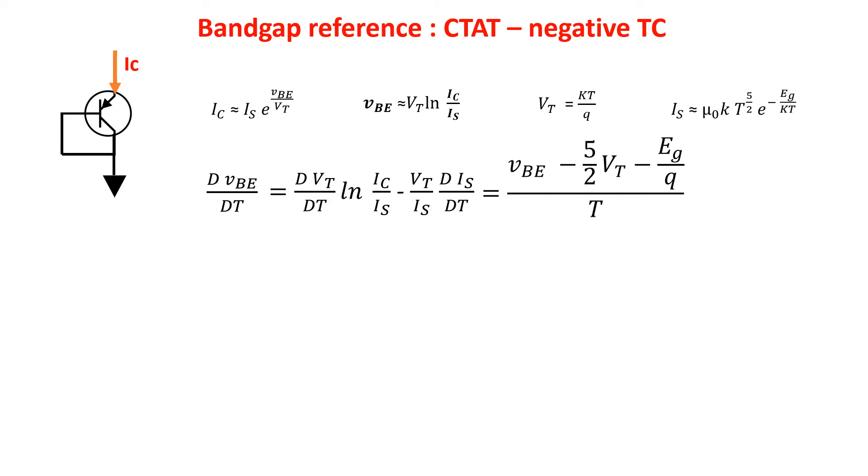If we keep into consideration that IC is not constant but has a linear relationship with temperature, the derivative is this one here. At room temperature 300 Kelvin with VBE equals 800 millivolts, being the silicon bandgap equals 1.12 eV, we have a temperature variation of negative 1.5 millivolts per Kelvin.